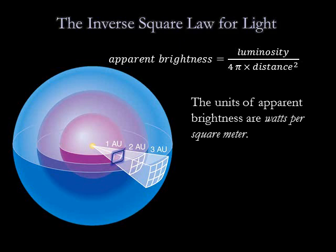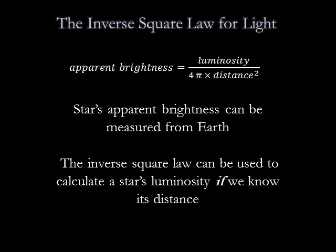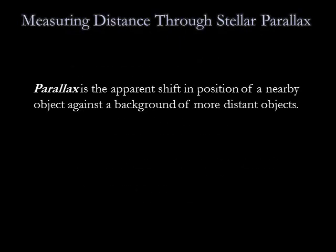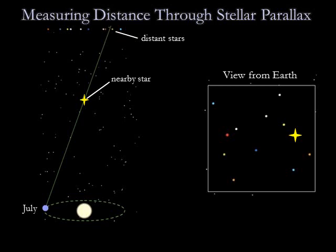In equation form, the inverse square law of light says apparent brightness equals luminosity over 4π times the distance squared. The units of apparent brightness are watts per square meter. In principle, we can always determine a star's apparent brightness by carefully measuring the amount of light per square meter we receive from the star on Earth. We can then use the inverse square law to calculate a star's luminosity, but only if we have a way to know its distance. The most direct way to measure a star's distance is with stellar parallax — the apparent shift in position of a nearby object against the background of more distant objects.